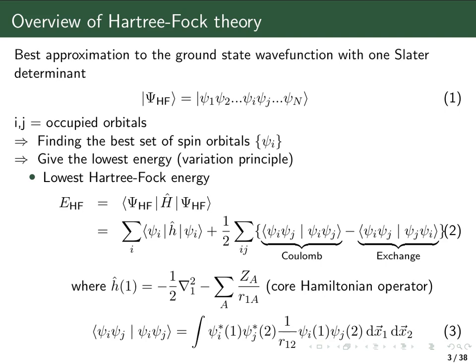The Slater determinant here is, as you learned in previous lectures, an anti-symmetrized product of spin orbitals. And in order to get this anti-symmetrized product, we can use the trick of writing this product of spin orbitals up in a Slater determinant, but it is essentially just this product of spin orbitals. All the spin orbitals which are included in the Hartree-Fock determinant we call occupied orbitals.